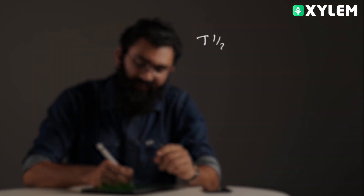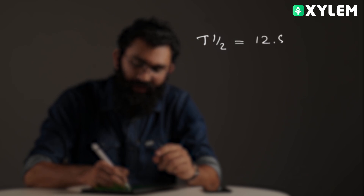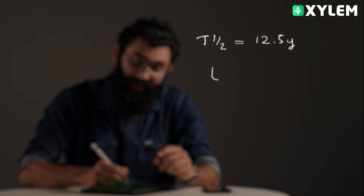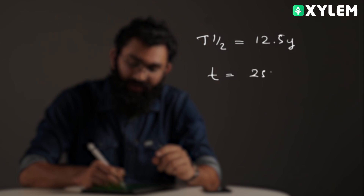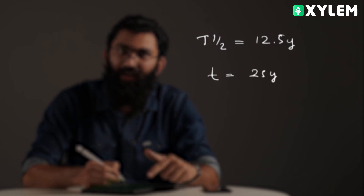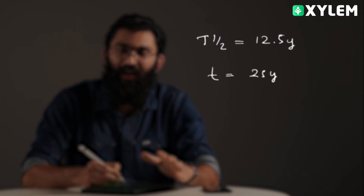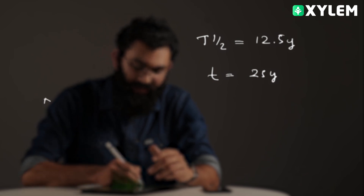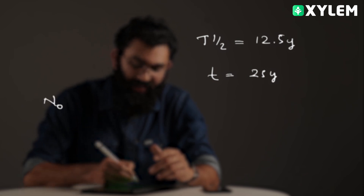So, half-life is 12.5 years. Total time is 25 years. So, 12.5 goes into 25 twice. The initial number of nuclei is N0.